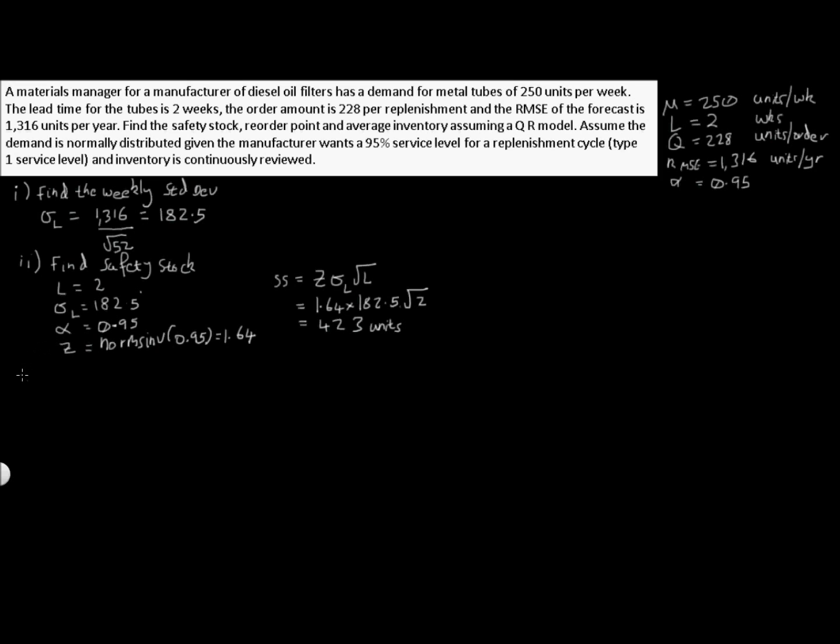Next we're asked to find what our reorder point is for the QR model. So that will be our third step, finding our reorder point. To find our reorder point we need to use mu is 250 as we saw at the start. Again we're going to use our lead time of 2 weeks, and our z which we calculated of 1.64.